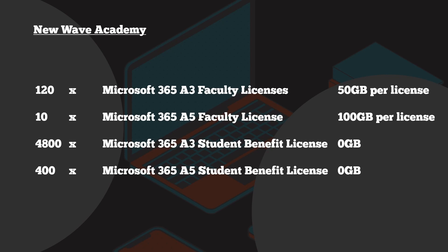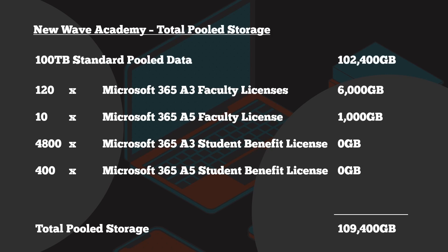So how does this look as a pooled storage calculation for New Wave Academy? Starting with the base hundred terabytes (broken down into gigabytes for clarity): the 120 A3 faculty licenses at 50GB each add 6,000GB. The 10 A5 licenses at 100GB each add another 1,000GB. That means the pooled storage has gone from a hundred terabytes to roughly 109 terabytes of storage.